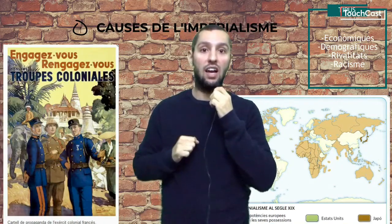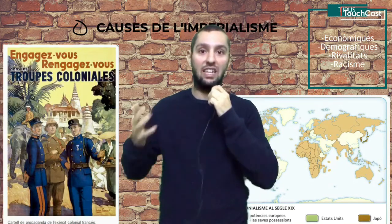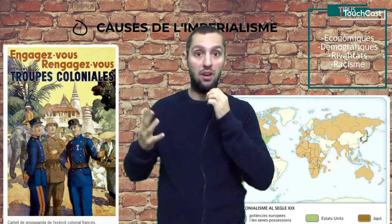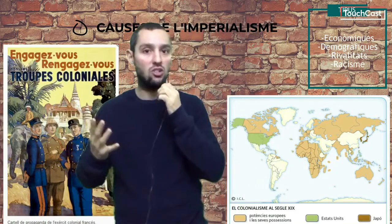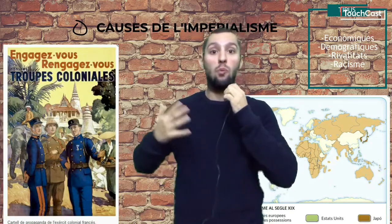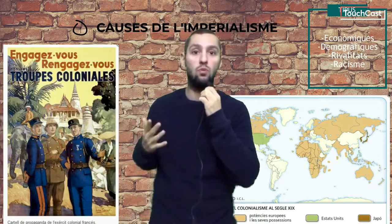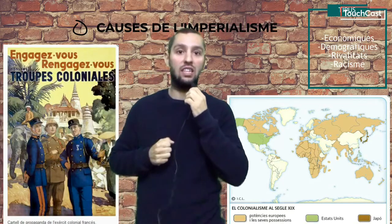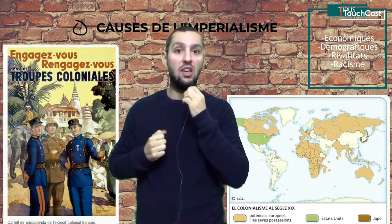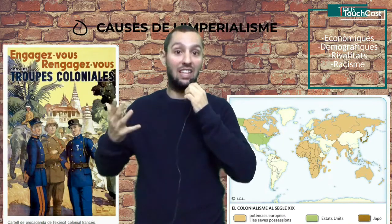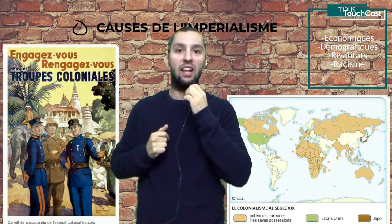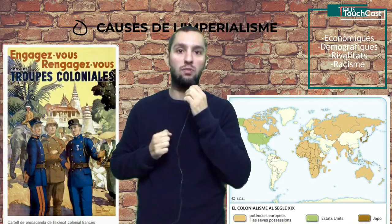How would they justify the relations of domination and exploitation over indigenous populations? First, we talk about the economy. European countries needed to continue this expansion, requiring raw materials such as coal, iron, rubber, and also imported goods like sugar and chocolate at practically negligible prices, and finally, investment surpluses could yield further benefits.